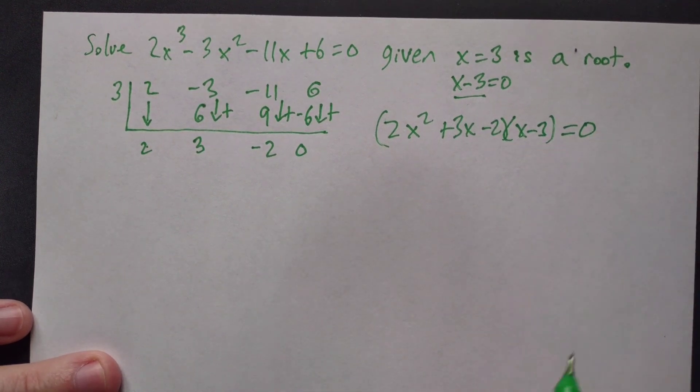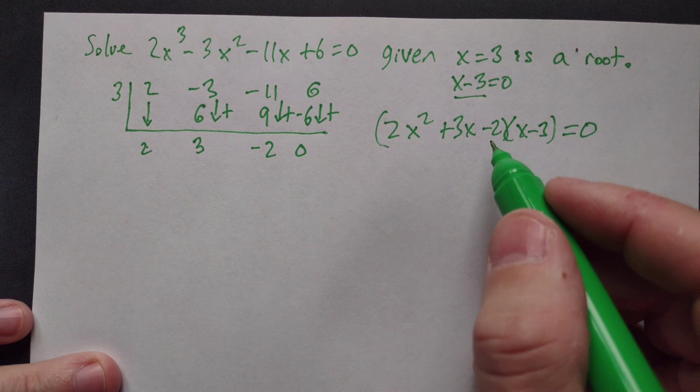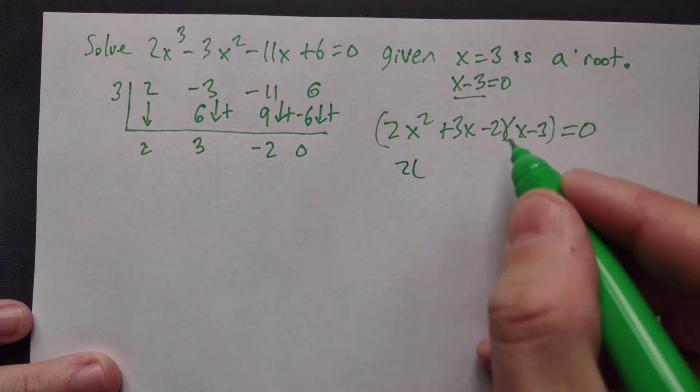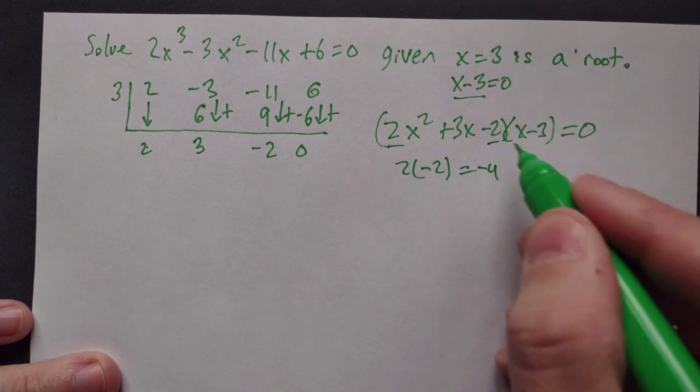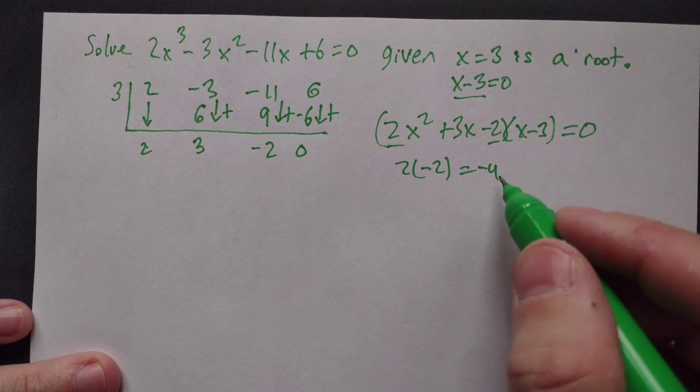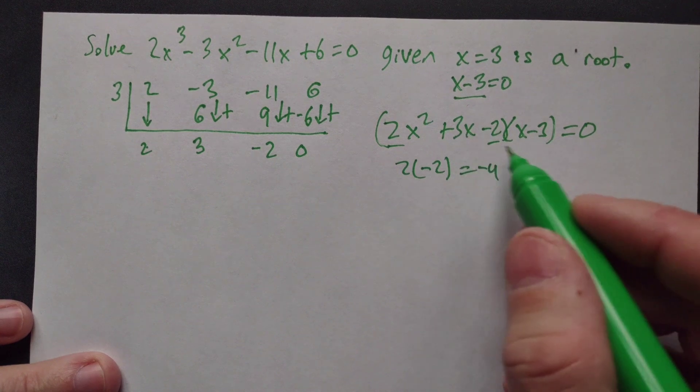We can factor this trinomial. Multiply 2 times -2, which is -4. Then look for two numbers that multiply to -4 and add up to 3.